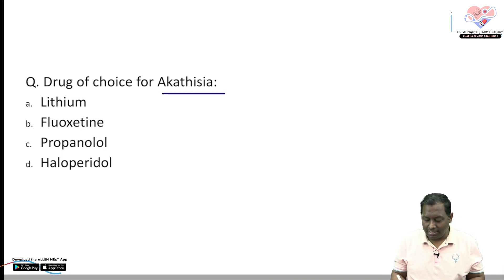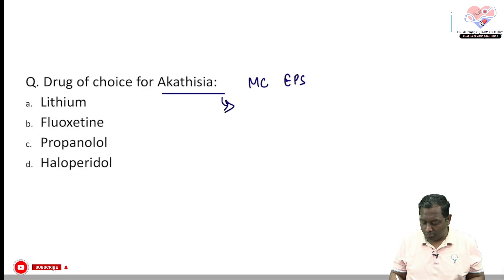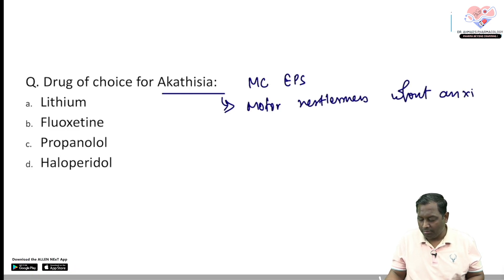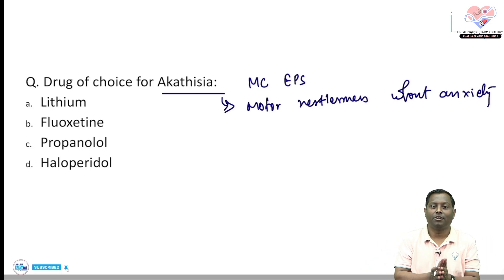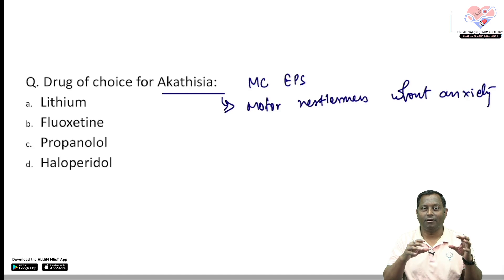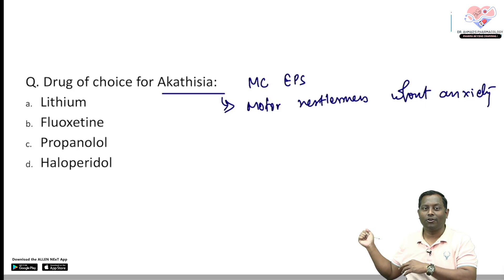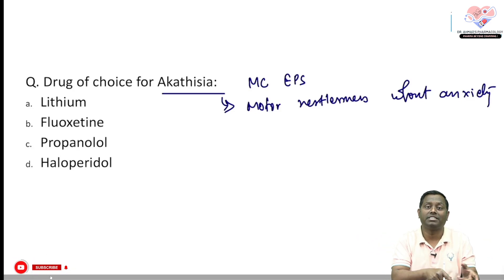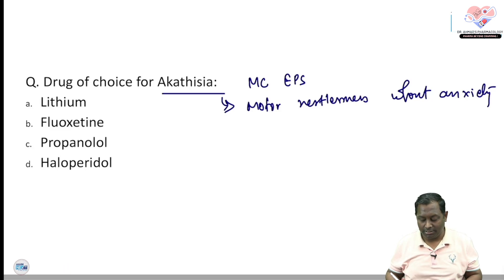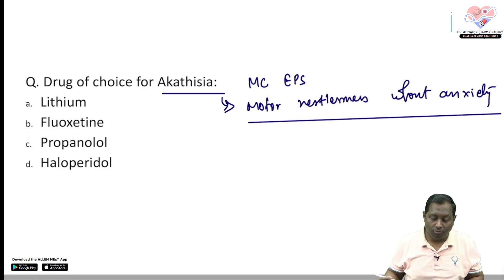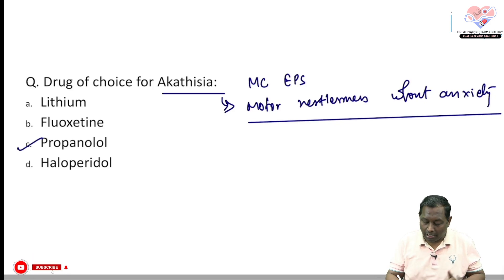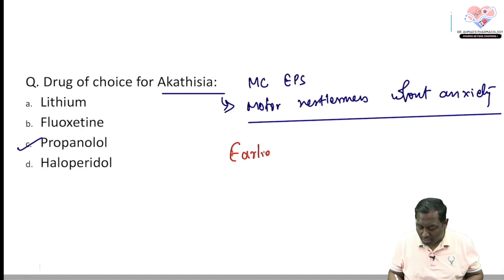The drug of choice for akathisia: akathisia is the most common extrapyramidal symptom and is defined as motor restlessness without a source of anxiety. For example, if your exam is four months away and you're walking around your room restlessly — that is a normal response because there is a source of stress. But motor restlessness without any source of anxiety is akathisia, and the drug of choice is propranolol.